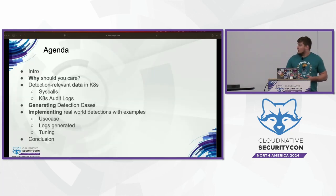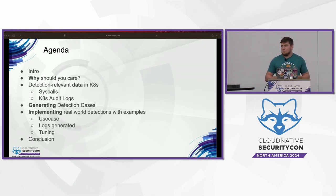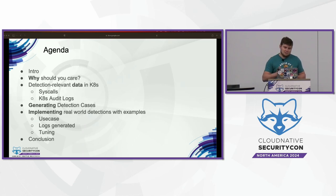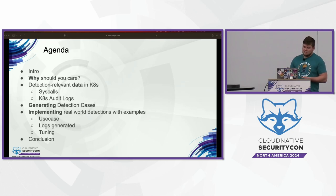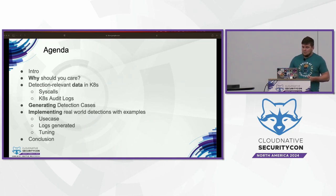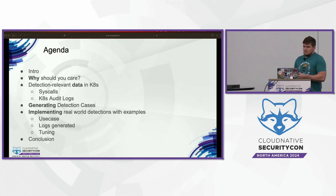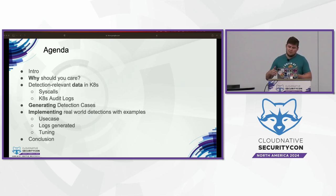A quick overview of the agenda. First, I'll start with data points on why you should build Kubernetes detection engineering into your security backlog — why spend the bandwidth doing it. Then we'll talk about a high-level threat model of what an attack cycle in a Kubernetes cluster might look like, and specifically the two minimum data sources you need to start detecting bad things. We'll cover syscalls at a high level, go deeper on Kubernetes audit logs, and talk about how to get started writing detection cases — what mindsets to apply, where to look for inspiration, and what not to do. At the end, we'll look at real-world log examples, common true positive use cases, and how to bring false positives down to a low ratio.